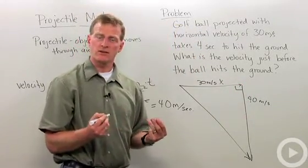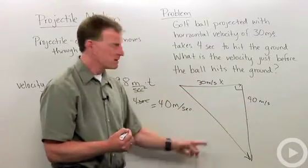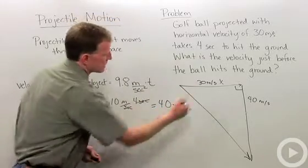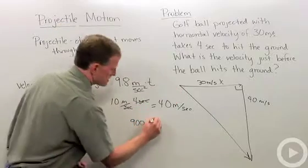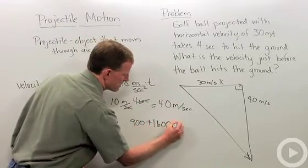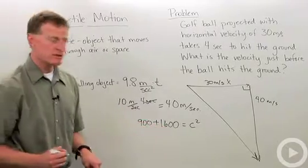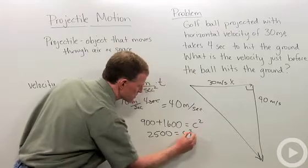And I can use the Pythagorean theorem to solve this question, where I have a squared plus b squared equals c squared. So let's go ahead and plug in. a squared is going to be 900, b squared is 1,600. And so c squared is 900 plus 1,600 or 2,500 equals c squared.